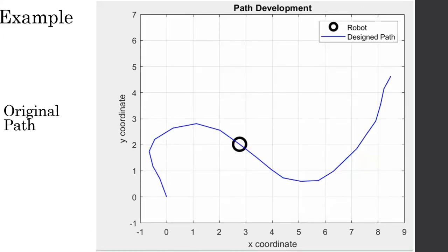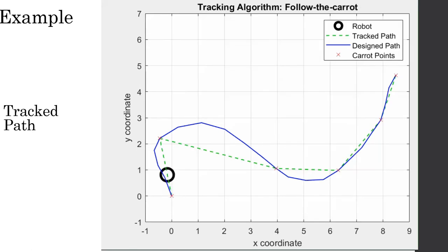Here we see an example of a path developed by a user driving the robot. And here, we implement the follow-the-carrot path tracking algorithm for the robot to track the path autonomously. We see the carrot points obtained from the memorized path. This is one of the simplest algorithms for path tracking.